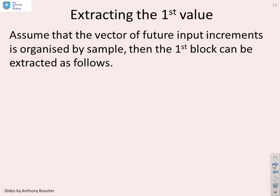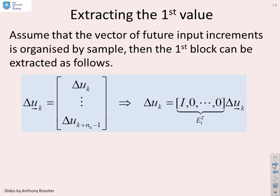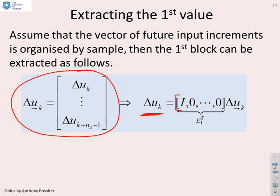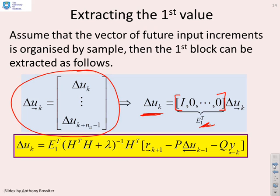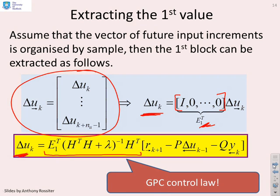To extract the first value, we use simple vector algebra. If delta_U_future = [delta_U_K, ..., delta_U_{K+N-1}]^T, then the first value delta_U_K can be extracted by multiplying delta_U_future by the selector matrix E1^T. Therefore, the first control increment delta_U_K is given by E1^T times the optimum vector, and again this is linear in the target, past inputs, and past outputs.